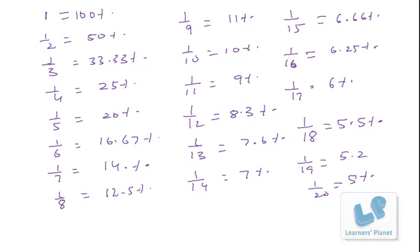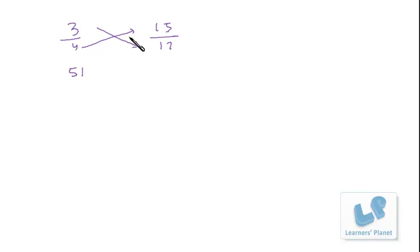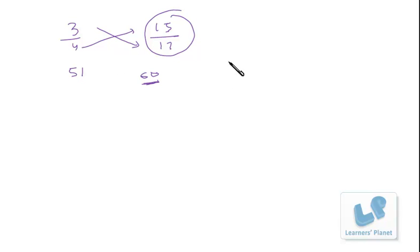The next topic is comparison of fractions — comparison of proper fractions. I have already discussed this technique but here's a quick recap. Suppose we have fractions 3/4 and 15/17 and we need to compare which one is bigger. Just go for cross multiplication: 3 × 17 = 51, and 4 × 15 = 60. Since 60 is bigger, 15/17 is greater than 3/4. This is the cross multiplication method.